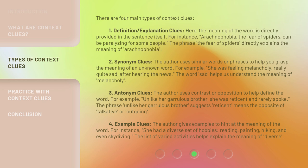4. Example clues — the author gives examples to hint at the meaning of the word. For instance: "She had a diverse set of hobbies — reading, painting, hiking, and even skydiving." The list of varied activities helps explain the meaning of "diverse."